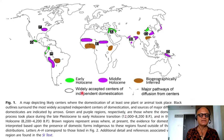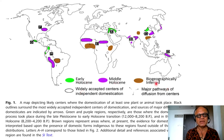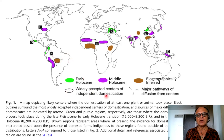This is one from PNAS, Proceedings of the National Academies of Sciences, which is one of the very prestigious journals. We're looking at early Holocene, middle Holocene, and geographically inferred domestication. The colors with black lines around them are considered as centers of independent domestication. Some don't have a black line, but others do, indicating some potential link between those centers.